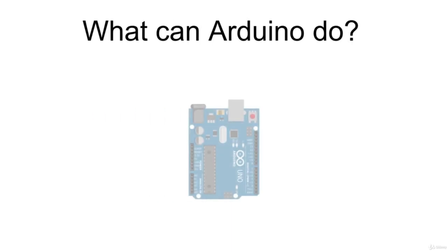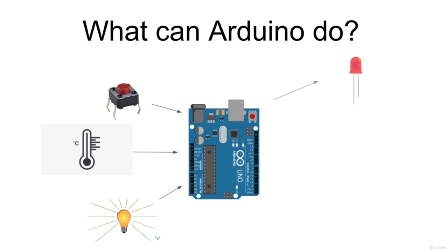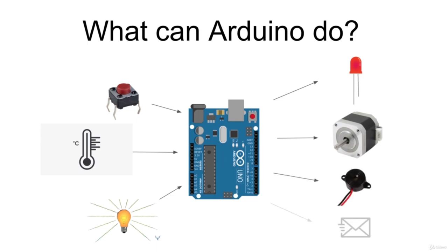What can an Arduino do? An Arduino board is able to read inputs such as the pressure of a button, the temperature of the environment, the amount of light in a room, and to use this information to control a certain output or execute a specific action, such as turning on or off a light or an LED, activating a motor, reproducing a sound, or even sending a message on Twitter or an email via internet.